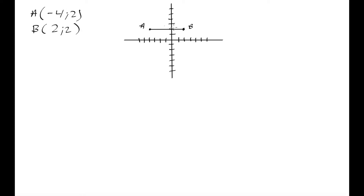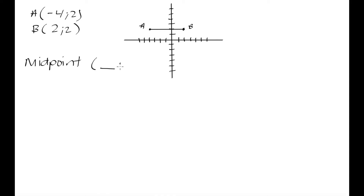We can approach this visually to find the midpoint. We already know that the y coordinate of the midpoint is going to be 2, because the midpoint has to fall somewhere on the line, and this line always remains at y equals 2. It does not change its y coordinate at any point. So our midpoint is going to have an unknown x coordinate for now and a y coordinate of 2.